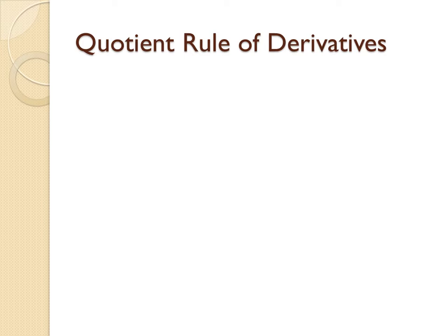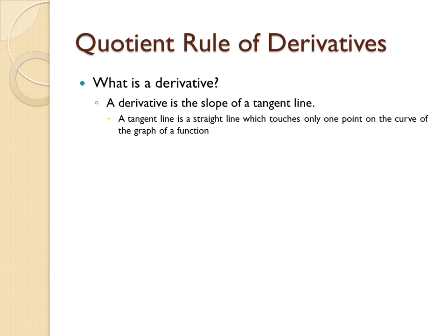First and foremost, let's talk about what a derivative is. Informally, a derivative is the slope of a tangent line, which is a straight line that touches only one point on the curve of the graph of a function.